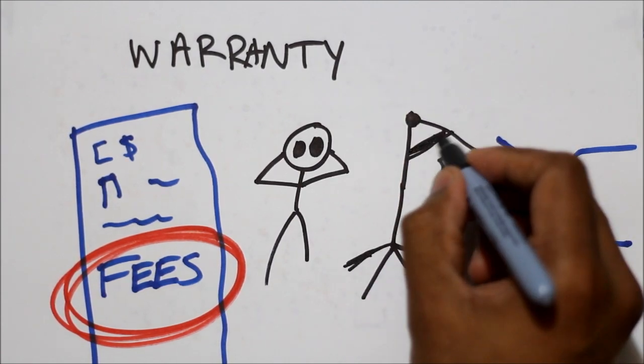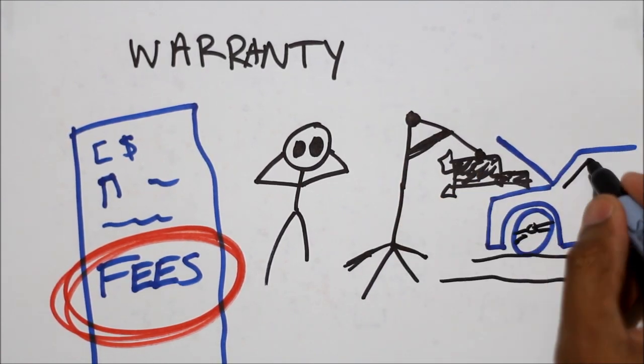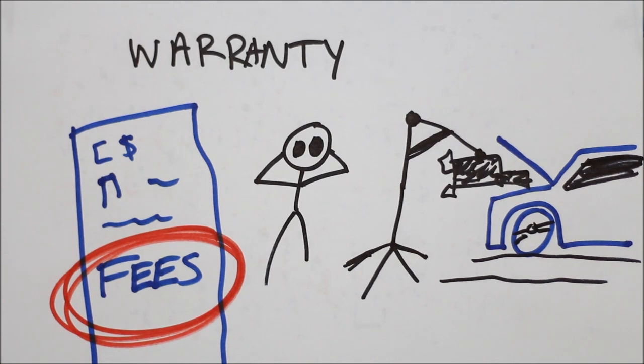Used car dealers get kickbacks for selling warranty. The best type of warranty is an extended warranty from the manufacturer, though that can get pretty expensive.